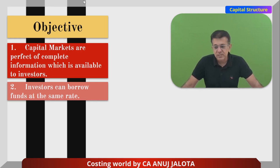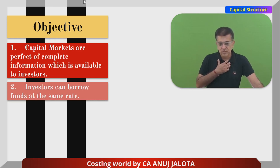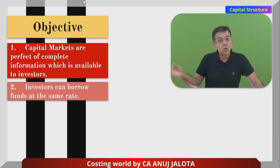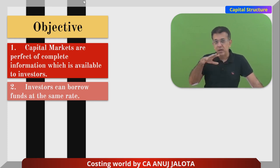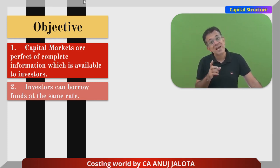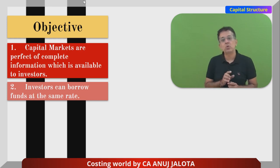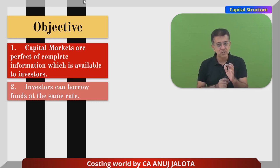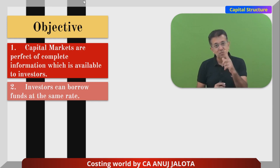Assumption number two: investors can borrow funds at the same rate. This means if I want money for any purpose, I can borrow at, say, 10%. If a company also wants to borrow, they can also borrow at 10%. So individuals and companies borrow at the same rate. This assumption was required for arbitration.